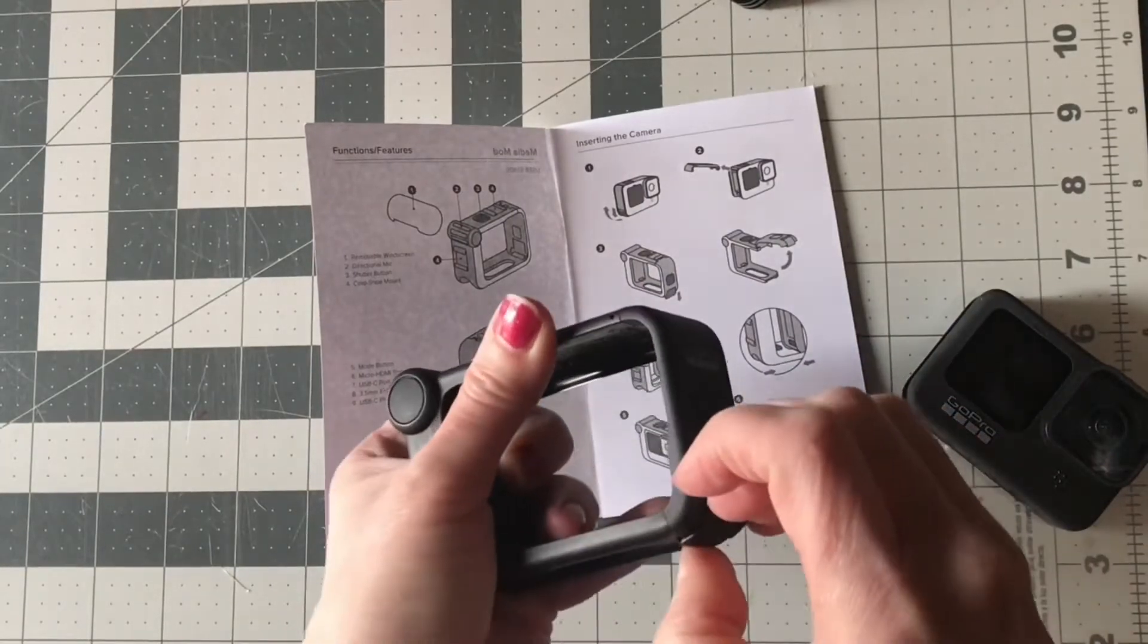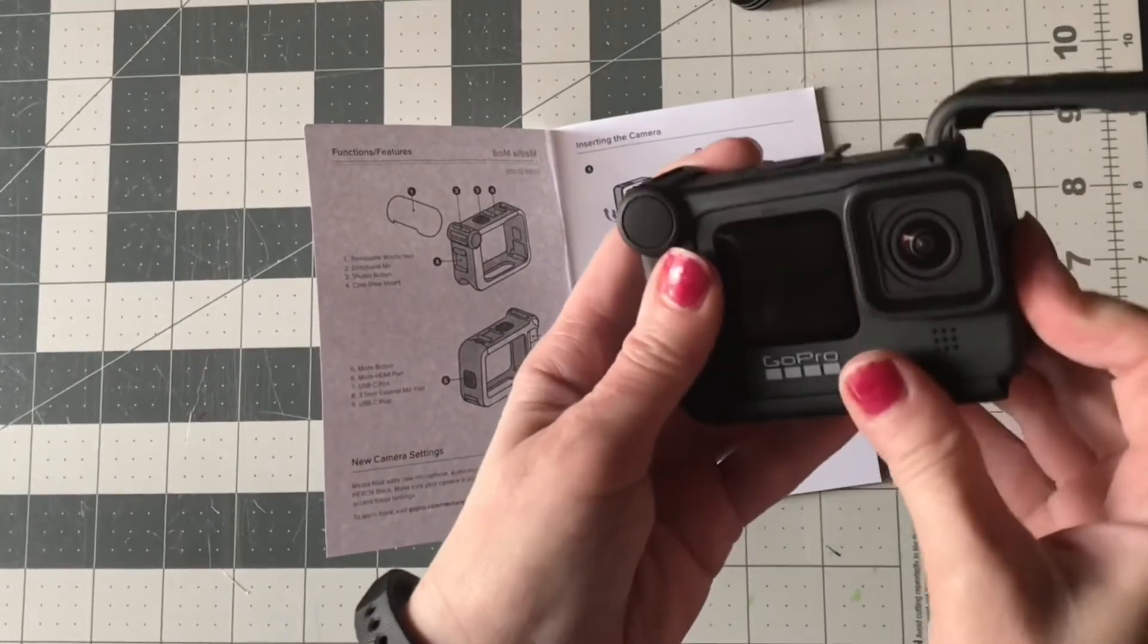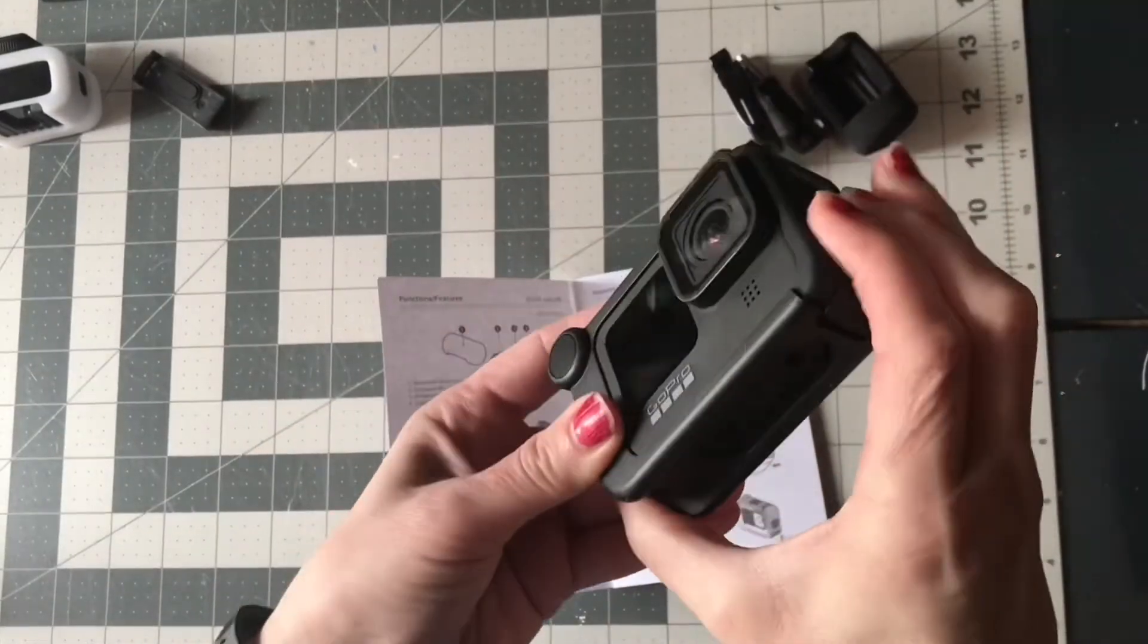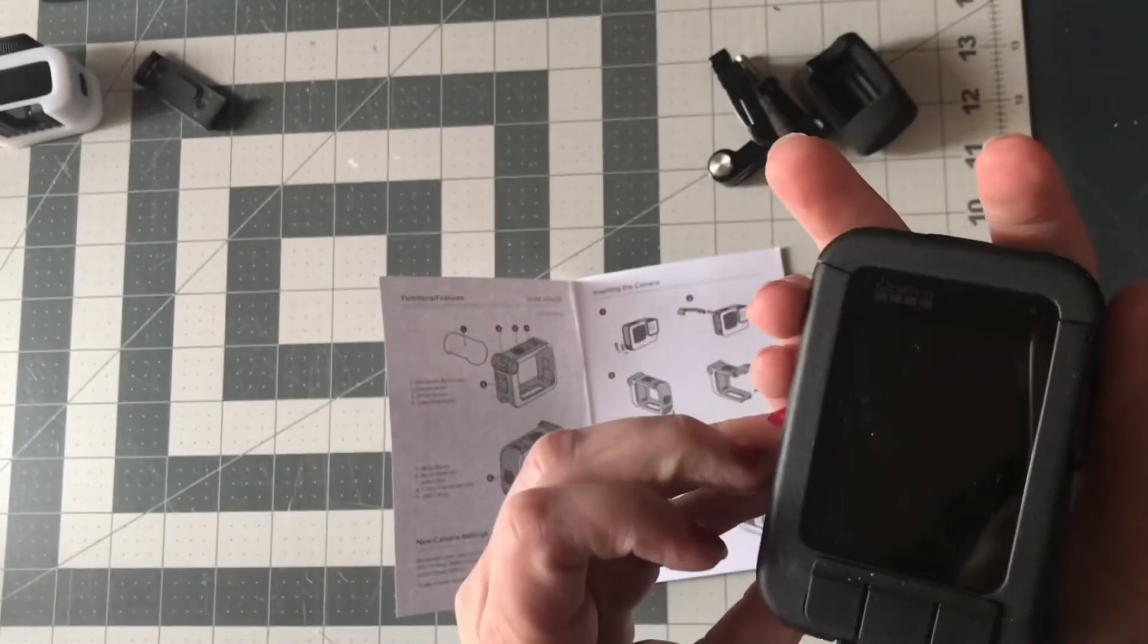Now you just have to pull that down to open that up. It was a little difficult to pull that down, but you just slide your GoPro in and then it snaps into that USB-C plug. Then you snap that in place and now it's all locked up in there.